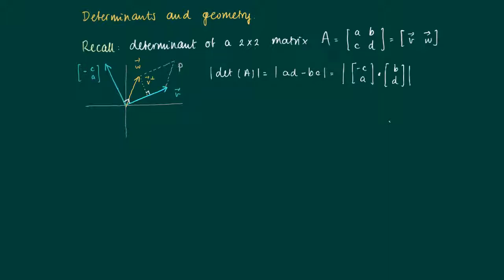Now I look at the angle between this perpendicular vector to V and W. Using the formula for the angle between the two, this is no more than the length of minus C, A, times the length of B, D, times the absolute value of the cosine of the angle of W with minus C, A.